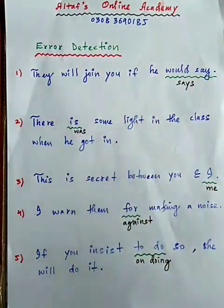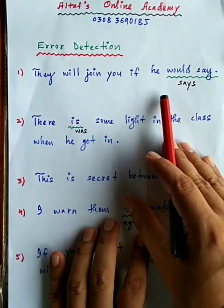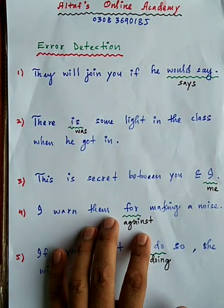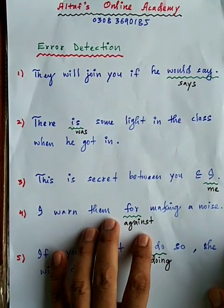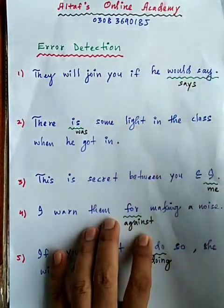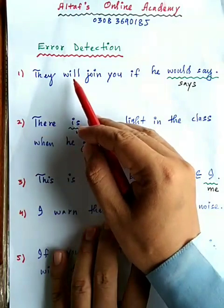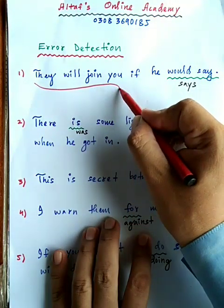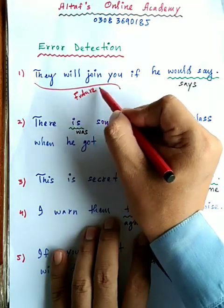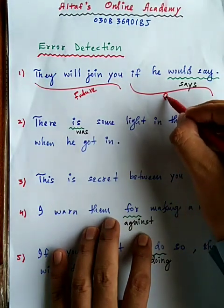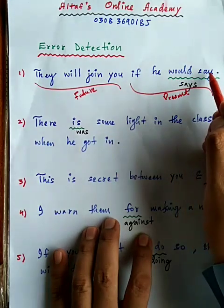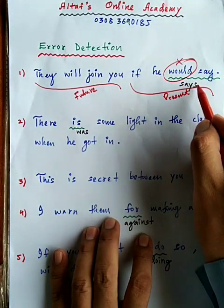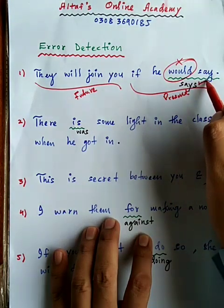اگر if والا part پہلے رکھیں تو وہاں full stop کی جگہ comma آئے گا۔ اب یہاں check کریں: 'they will join you if he would say' — یہاں he would say غلط ہے۔ First conditional میں if والا part present simple میں رہے گا۔ Would تو present میں استعمال ہوتا ہی نہیں۔ He say بھی نہیں ہوگا۔ He کے ساتھ یہاں ہوگا 'he says' — یہ correct formation ہے اور would say غلط ہے۔